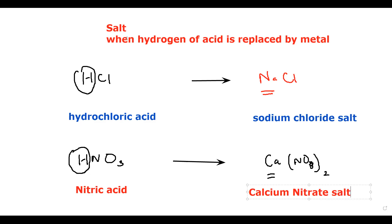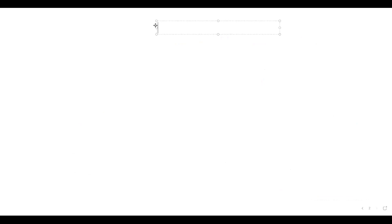So whenever the hydrogen of the acid is replaced by a metal, the substance formed is referred to as a salt. All salts are solid at room temperature.